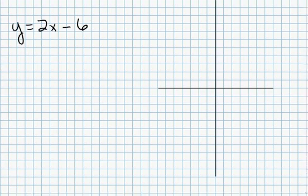I'm going to graph this equation without making a table. This equation is of the form y equals mx plus b, which is the slope-intercept form.